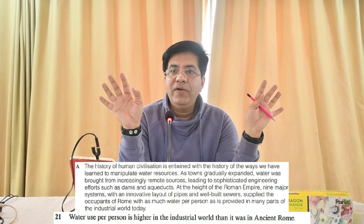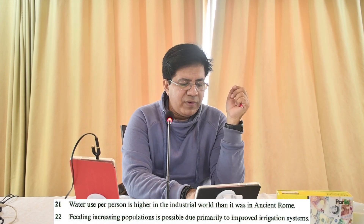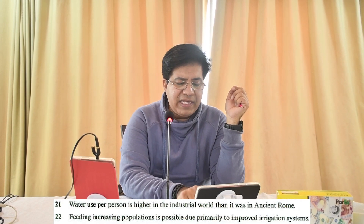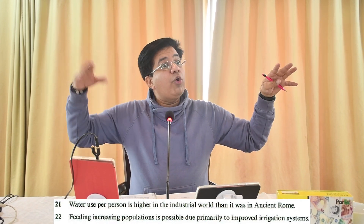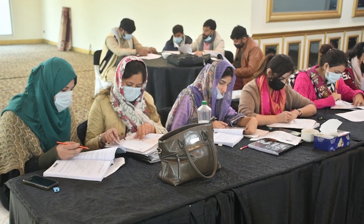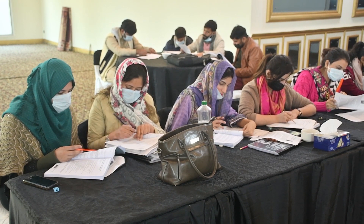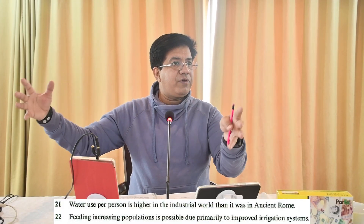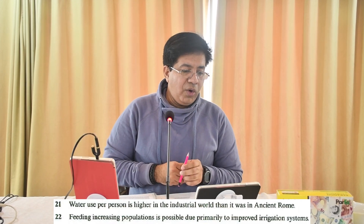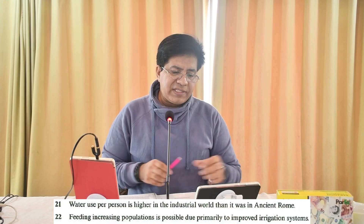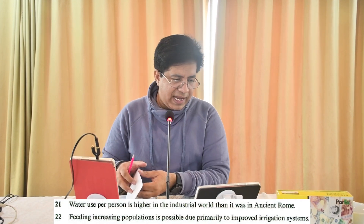Question 22: 'Feeding increasing populations is possible due primarily to improved irrigation systems.' Look here — if feeding the increasing population is possible because of improved irrigation systems, then Yes. Otherwise No, and if they don't tell us, Not Given. The clue words are 'increasing population' and 'irrigation system.' Please go back and look for those words.